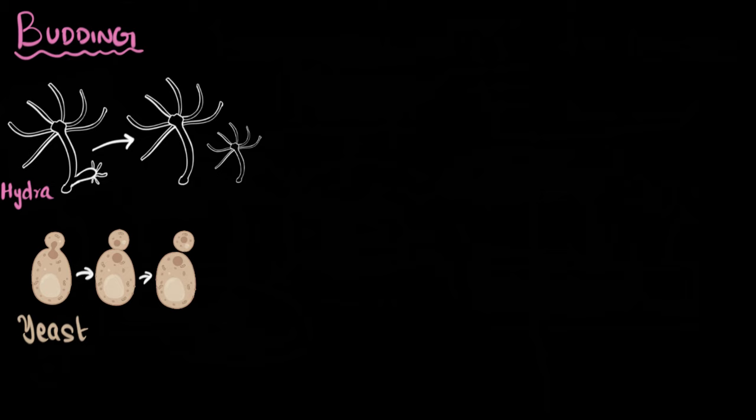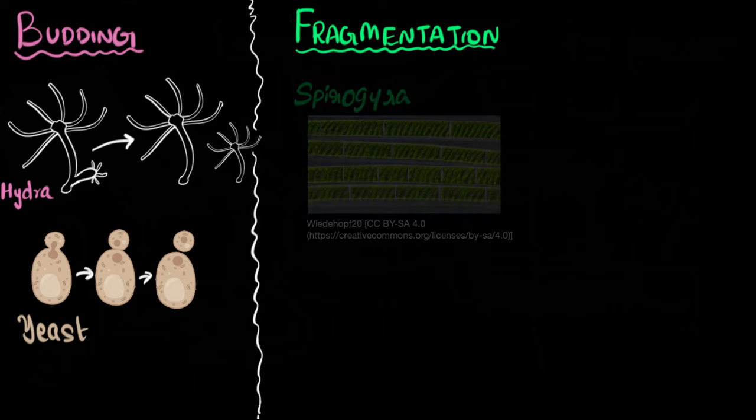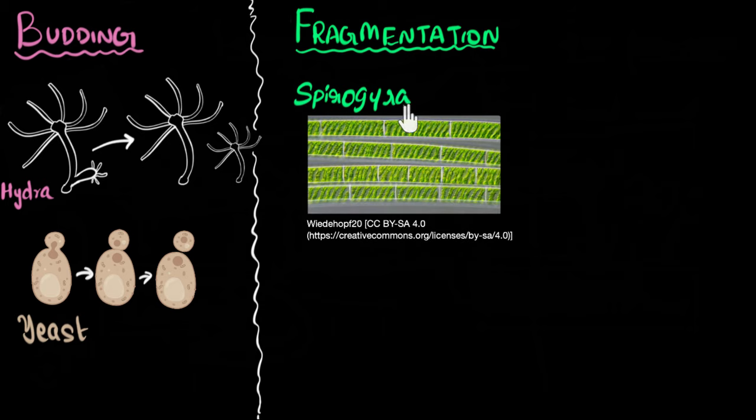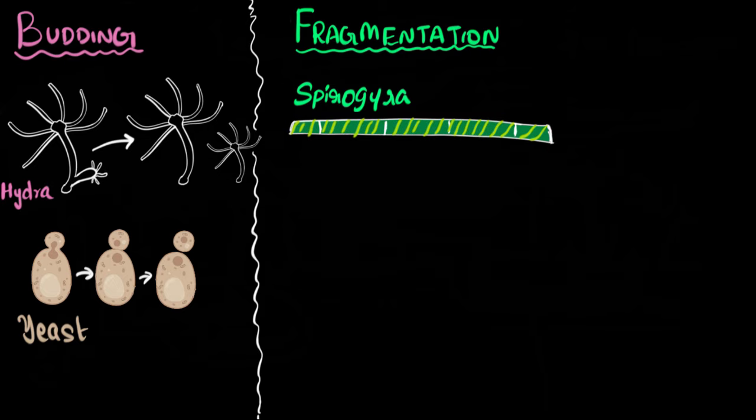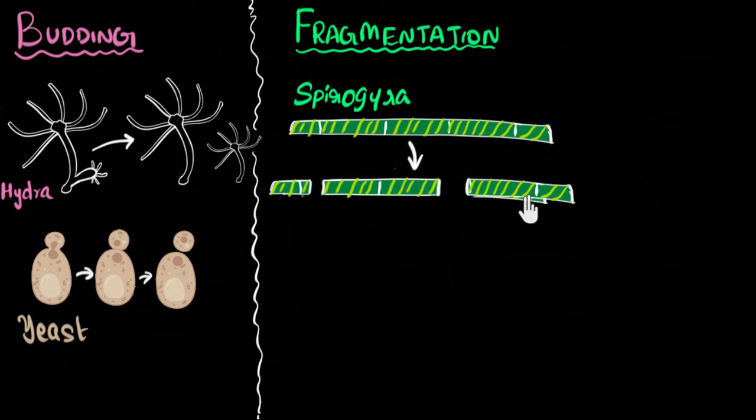This now brings us to the next type of reproduction called fragmentation. What's that? Well, again, let's take an example. Let's this time take the example of spirogyra. Spirogyra is basically a green algae. It looks somewhat like this again under a microscope. And again, if I take a drawing of this, when spirogyra matures and it's ready to reproduce, you know what happens to it? It basically just splits into many pieces.